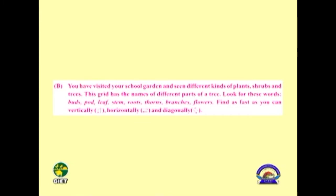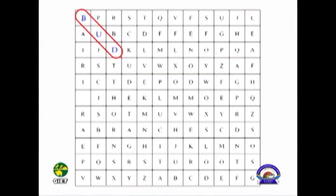You have visited your school garden and seen different kinds of plants, shrubs, and trees. This grid has the names of different parts of a tree. Look for these words: bud, pod, leaf, stem, roots, thorns, branches, flowers. Find them as fast as you can — vertically, horizontally, and diagonally. The first word is B-U-D. Bud — you can see the bud of a rose on your screen.